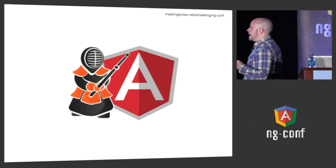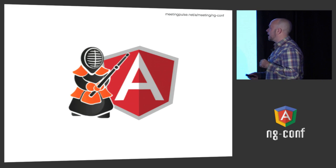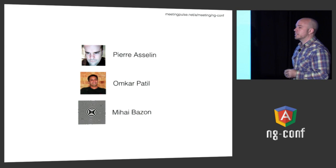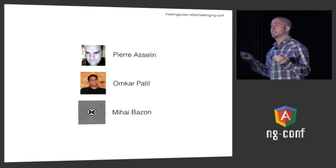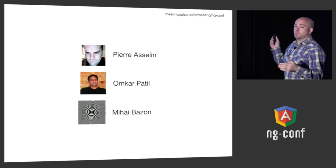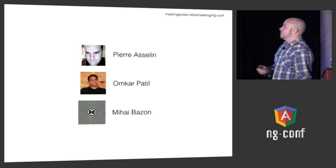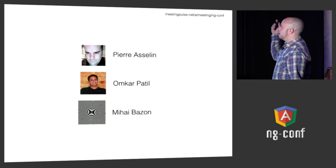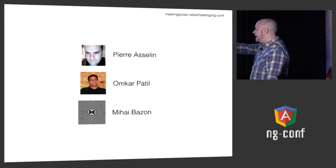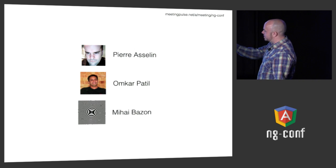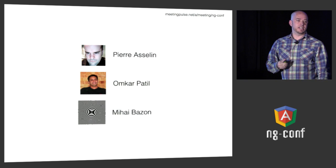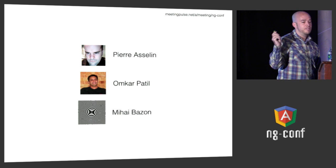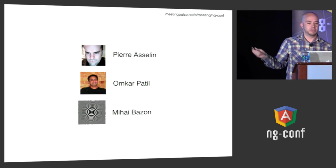Let's talk about Angular and Kendo UI for just a minute. Like any open source project, there's more than just me. These people actually do more of the work than I do. This is Pierre, Amkar, and Mihai, who works on the team — and as far as I know, he's an optical illusion. I've never actually seen him.